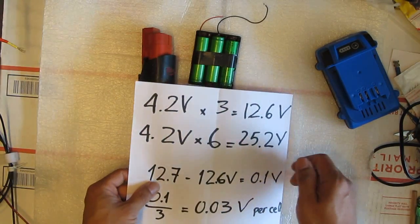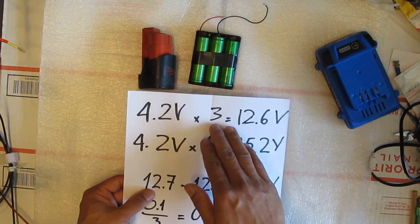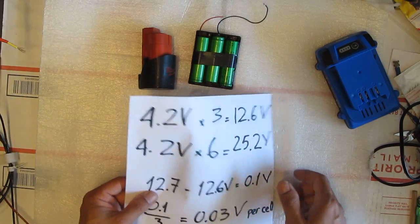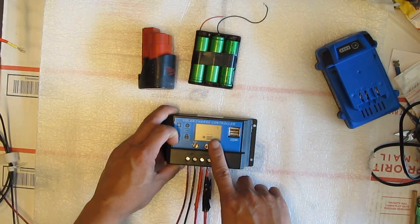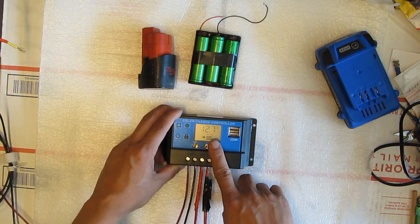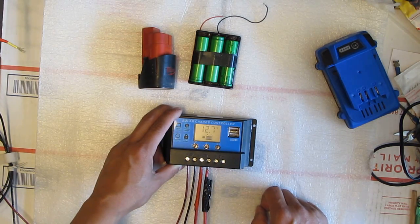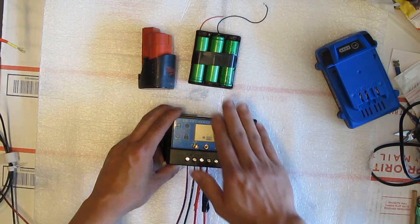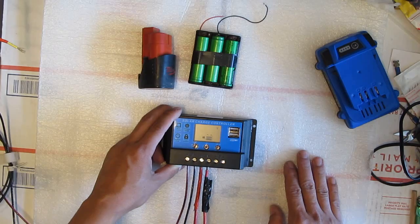But let's talk about the first one option here. At three cells it's at 12.6 volts. What I have here is this controller will allow you to go down as low as 12.7 volts. And what that means is you can charge three cells using this controller instead of lead acid batteries.